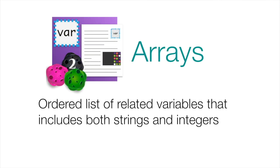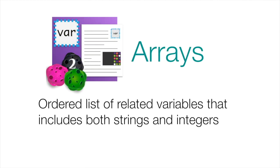An array is an ordered list of related variables that includes both strings and integers. Arrays group related variables together and keep code organized, which makes storing values more efficient.